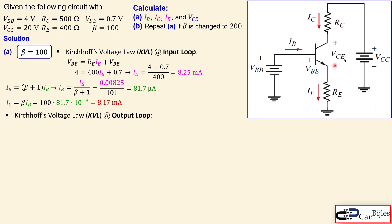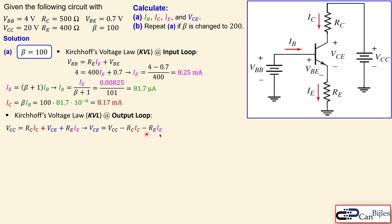Now we calculate VCE using Kirchhoff voltage law at the output loop: VCC equals the voltage across RC plus VCE plus the voltage across RE. Rearranging for VCE, we substitute VCC equal to 20 V, RC equal to 500 ohms, RE equal to 400 ohms, and our calculated currents. This gives VCE equal to 12.62 volts, completing part a.